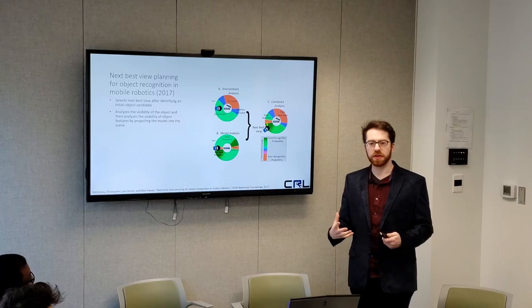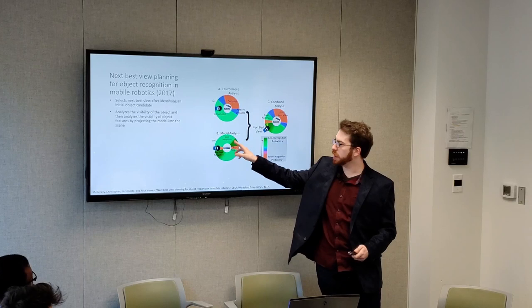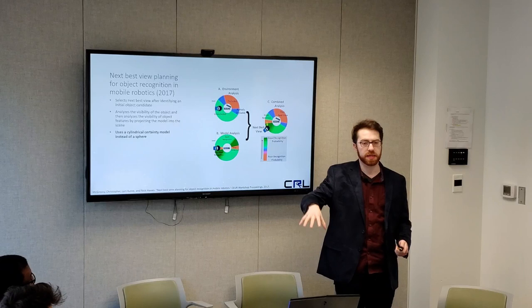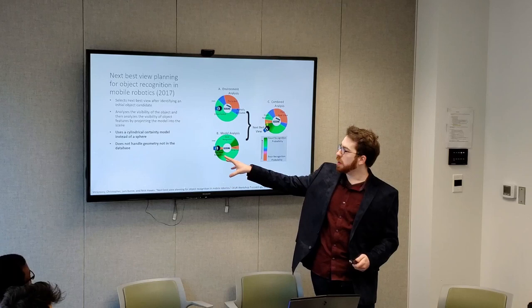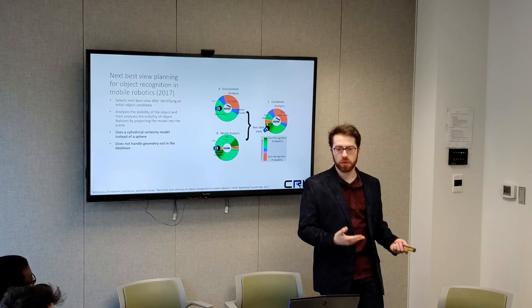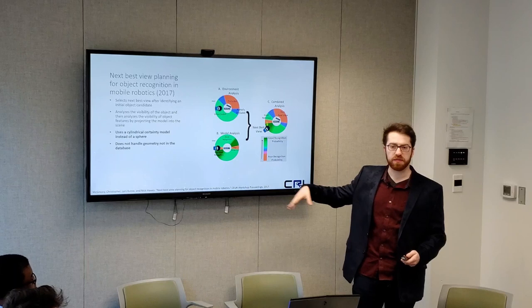It uses a probability model in a cylinder, but it's not taking into account that these mobile robots can actually get multiple views by raising or lowering the camera. Additionally, it does not handle novel objects — it's really just looking at what have I seen before, what do I have 3D models for? And also, it's not taking into account semantic information or novel approaches in navigation.